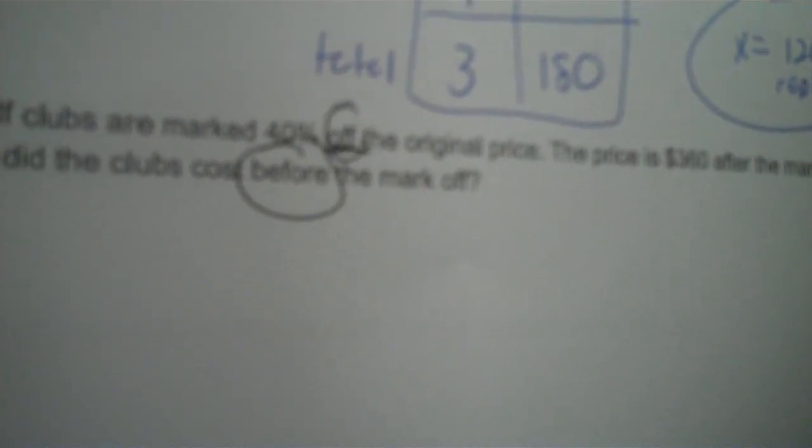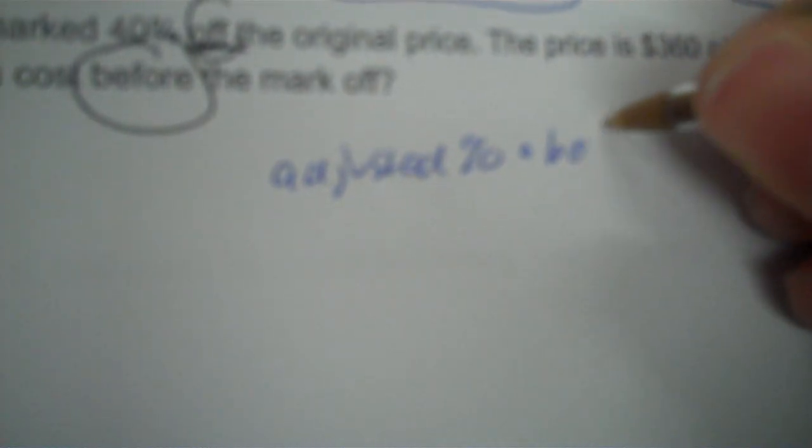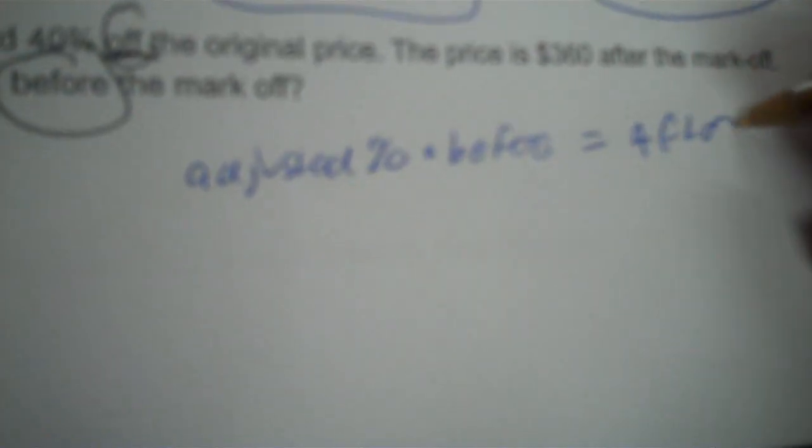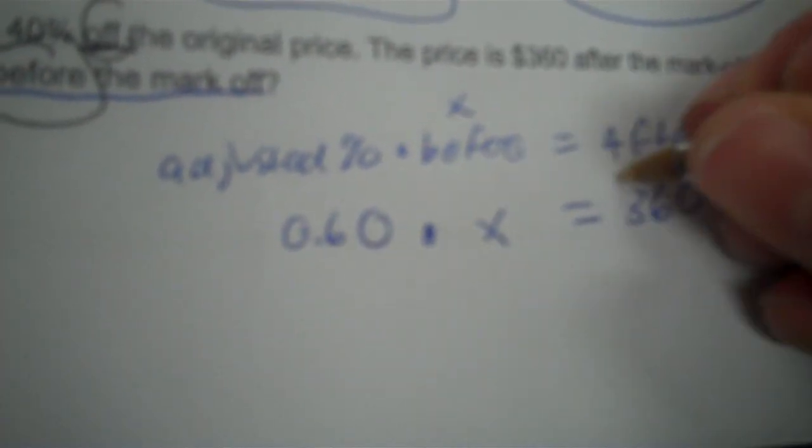A set of golf clubs are marked 40% off the original price. The price is $360 after the markdown. How much did the clubs cost before the markdown? So the percent this time doesn't say 'of,' it says 'off.' So that's your adjusted percent — not the table. Adjusted percent times before equals after. The question is asking me the 'before,' so the X is going to be here. You take 100% and subtract your 40% because it's off — that's why you have to adjust the percent. You have 60%. Move the decimal twice to the left: 0.60. After is $360.